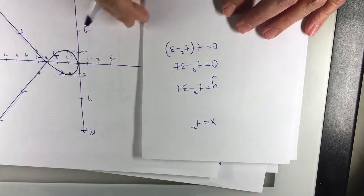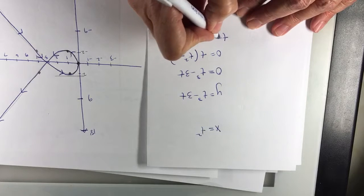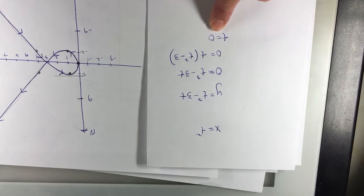Now t squared minus 3, I can, well t is 0. When t was 0, did I get y equals 0?